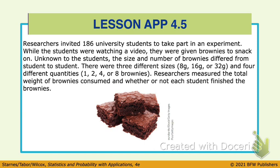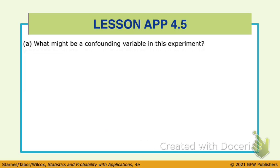Here's our example — flip over your page. Researchers invited 186 university students to take part in an experiment. While students were watching a video, they were given brownies to snack on. Unknown to the students, the size and number of brownies differed from student to student: three different sizes — 8 gram, 16 gram, and 32 gram — and four different quantities: either 1, 2, 4, or 8 brownies on their plate. Researchers measured the total weight of brownies consumed and whether each student finished the brownies.